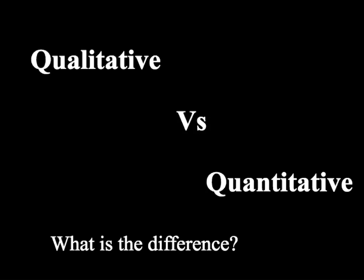First of all, it is important to note what the differences are between qualitative and quantitative information. Qualitative analysis tells us what is present. For example, it will tell us any poisonous substances in drinking water, as well as any trace elements. It doesn't tell us how much of it there is, just that it is present.